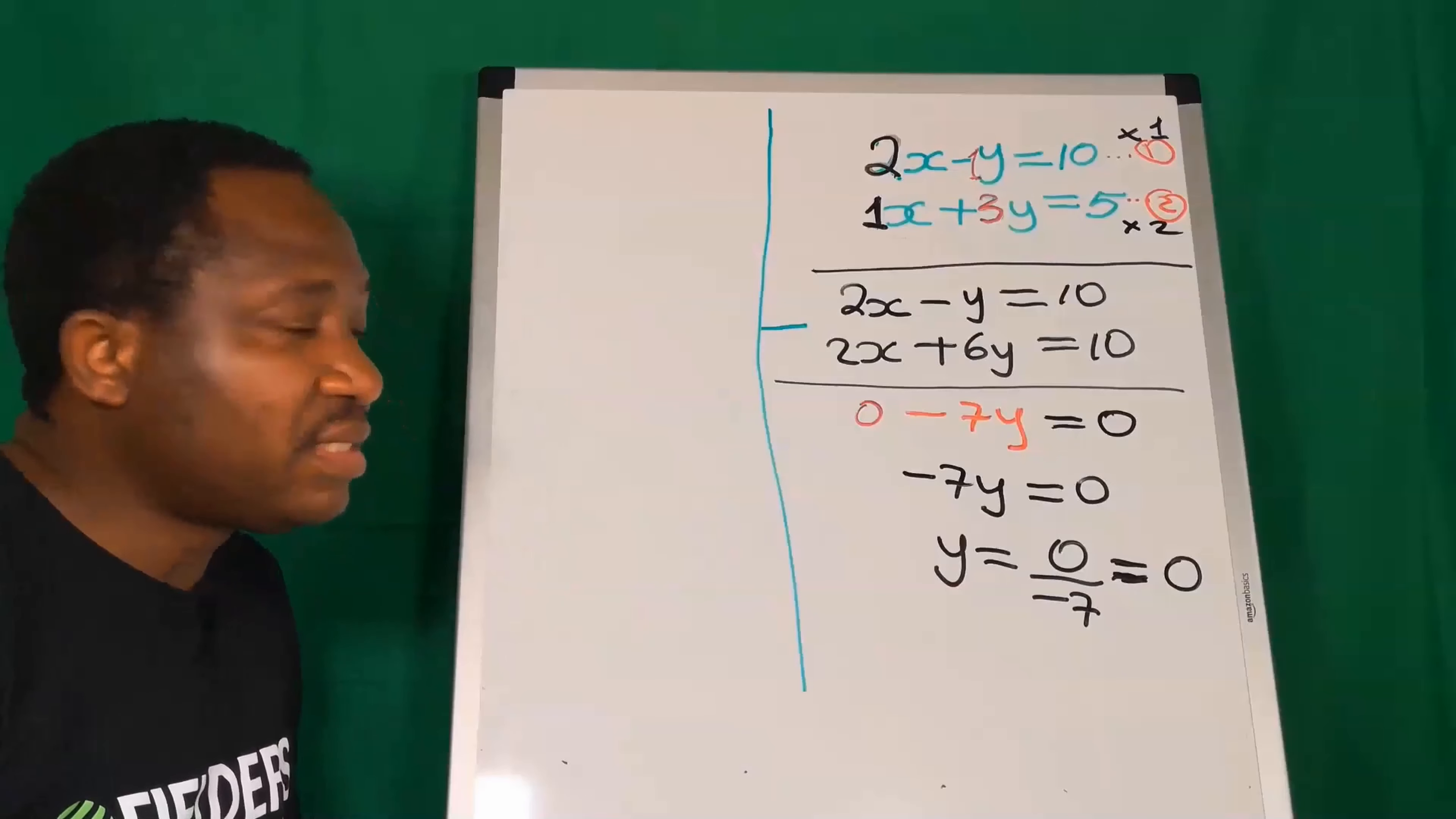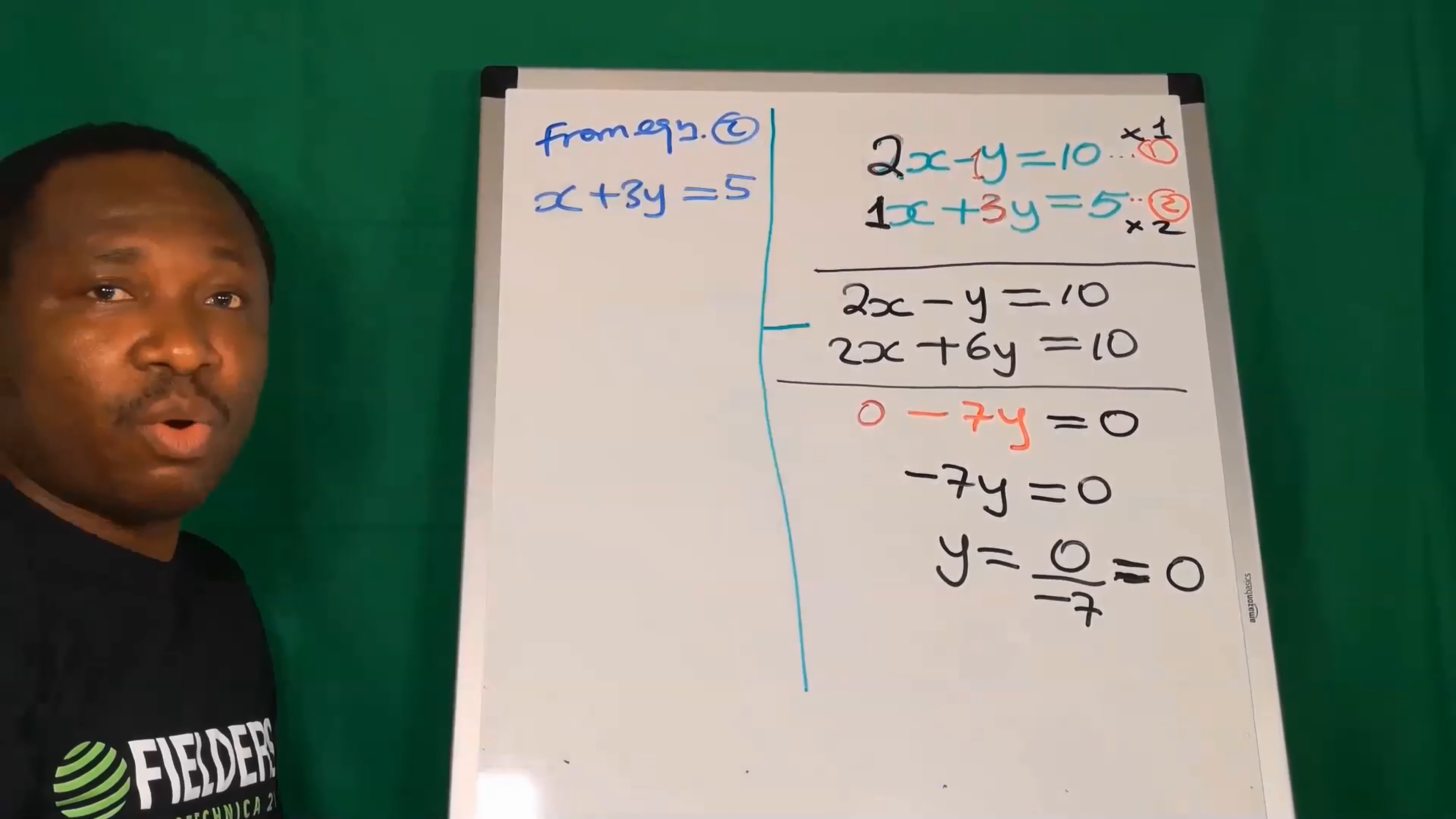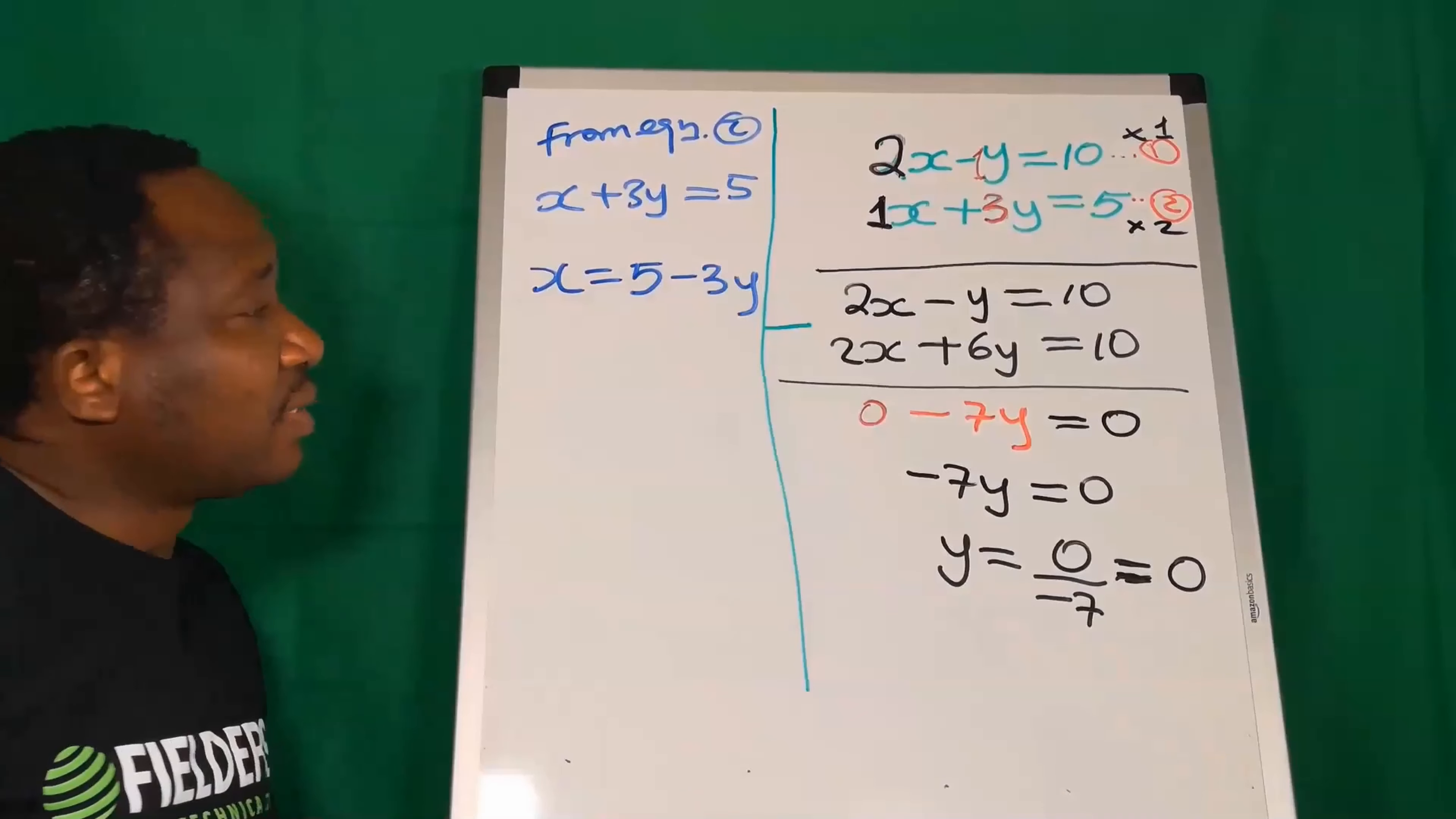In this problem, I'm going to use the coefficient of x in equation 1 to multiply everything in equation 2. The coefficient of x here is 2, and I'll multiply everything here by 2. The coefficient of x here is 1, so I will multiply everything in equation 1 by 1.